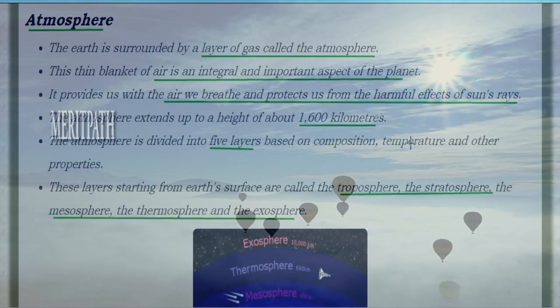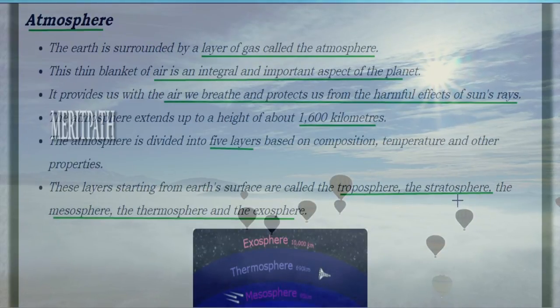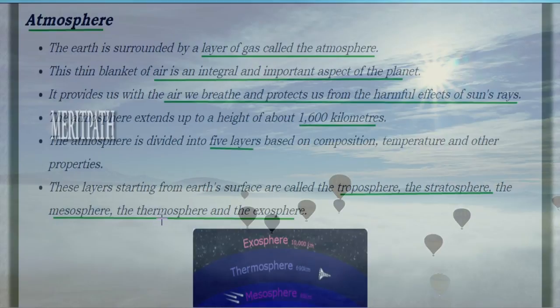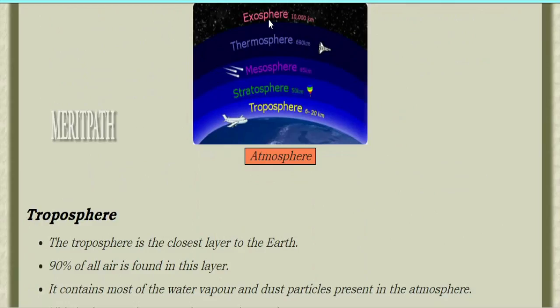The atmosphere is divided into five layers based on temperature and other properties: troposphere, stratosphere, mesosphere, thermosphere, and exosphere. Now let's study these five layers in detail.